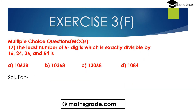Now question number 17: Multiple Choice Questions. The least number of five digits which is exactly divisible by 16, 24, 36 and 54. First find out the LCM — the Least Common Multiple — of the numbers 16, 24, 36 and 54.